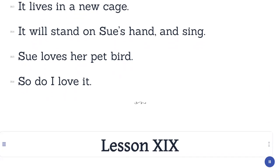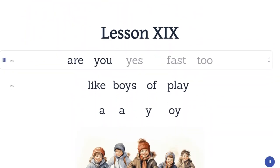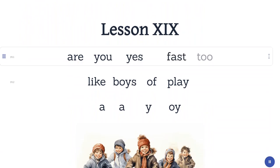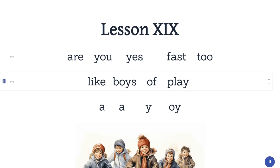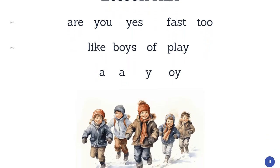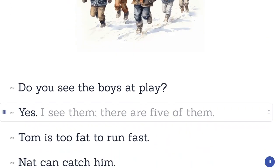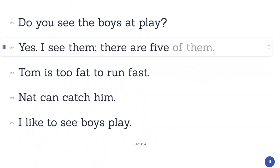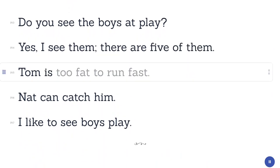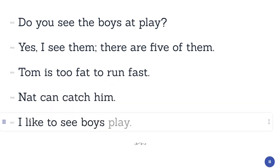Lesson 19. Are. You. Yes. Fast. Too. Like. Boys. Of. Play. Do you see the boys at play? Yes, I see them. There are five of them. Tom is too fat to run fast. Nat can catch him. I like to see boys play.